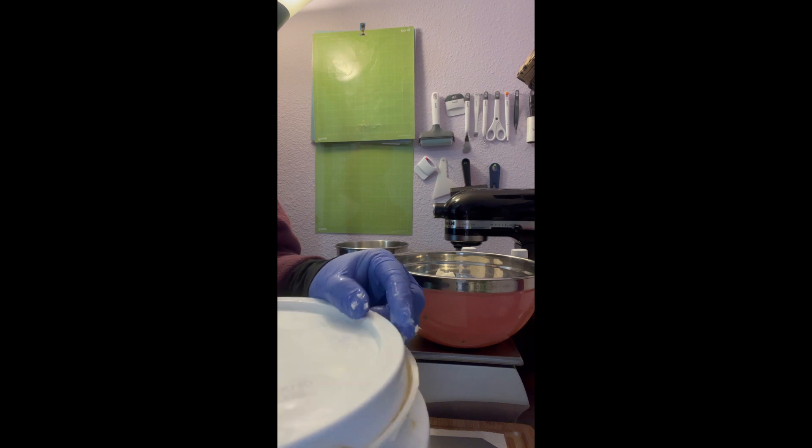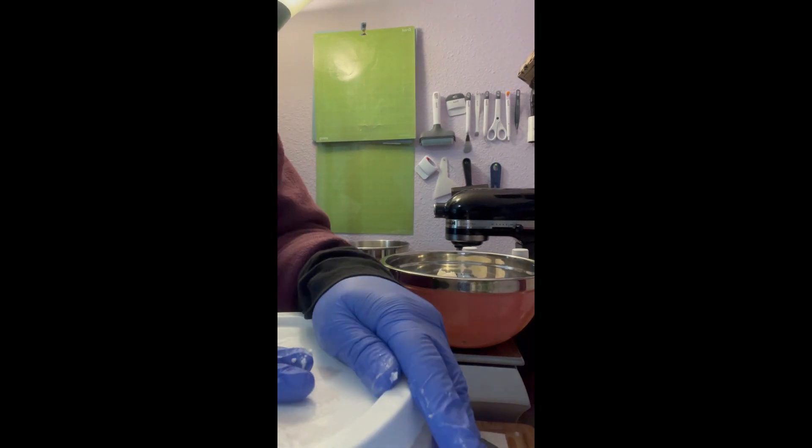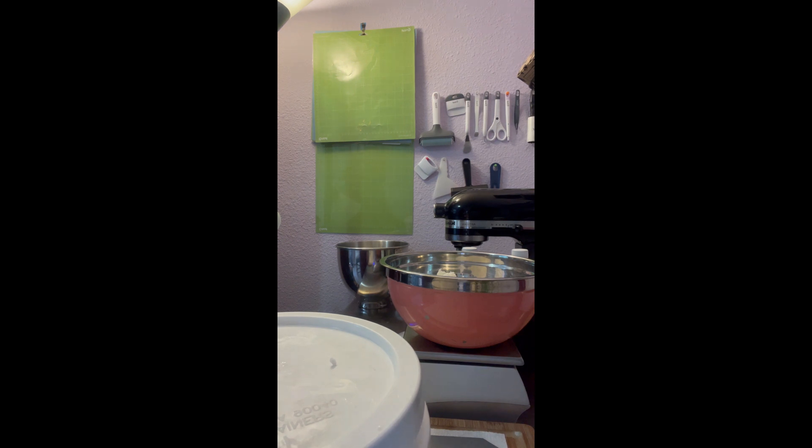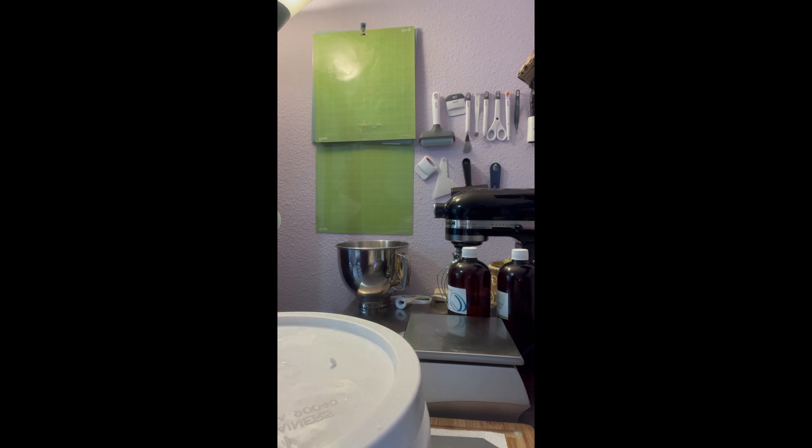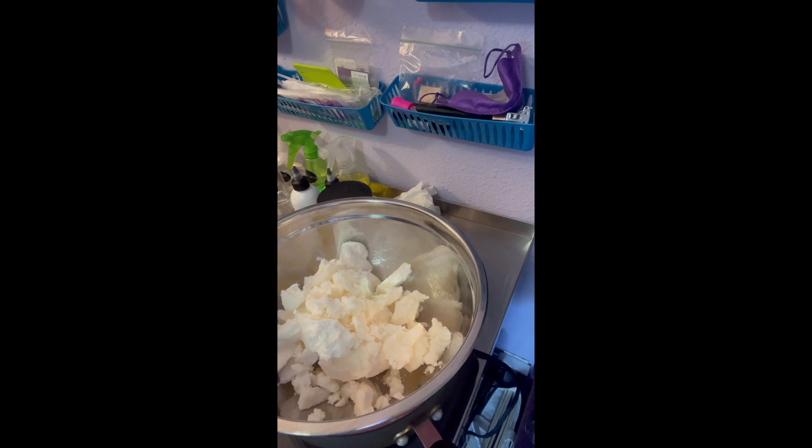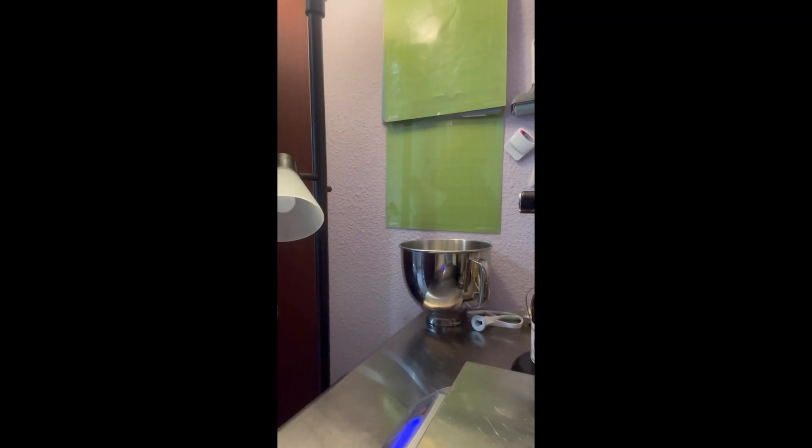Now we're going to take that and put it on the double boiler. Just turn that on. And we're just going to get it melted. And then we will add the rest of the ingredients once that has melted.